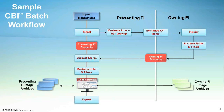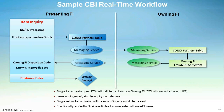The cross-bank inquiry items are flagged as external inquiry or foreign items so that this could be used as one of the criteria for business rule processing. This enables the presenting bank to handle foreign suspects differently from on-us suspects.